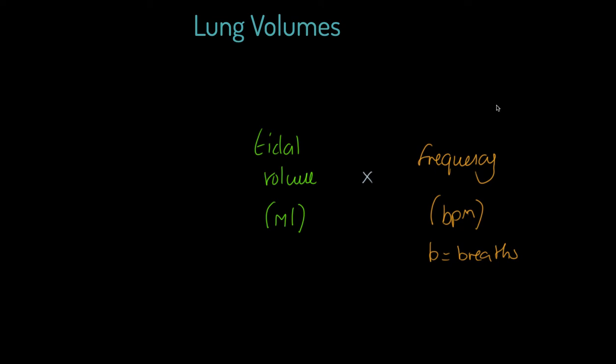If we multiply these things together - how many breaths per minute and how much we breathe per breath - we can calculate the total amount of air we breathe in a minute. This is what we refer to as your minute ventilation.